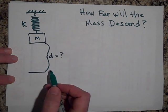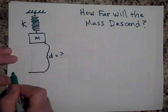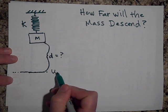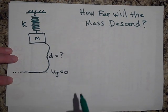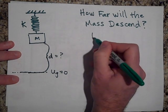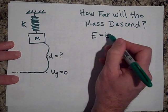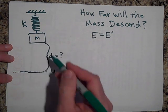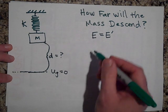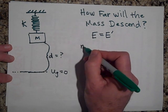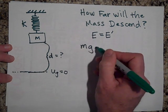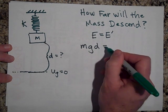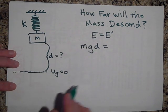Okay, the maximum distance it will stretch: I'm going to call this line my UG equals zero line and I'm going to find this using E equals E prime. The energy it has up here is just potential energy, it's not moving yet, so it'd be MGH, but H is D, so it's MG times D.